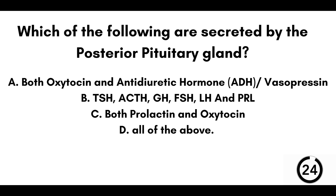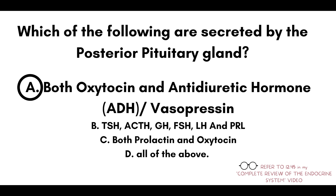Question number ten: which of the following are secreted by the posterior pituitary gland? A) Both oxytocin and antidiuretic hormone (ADH), also known as vasopressin. B) TSH, ACTH, GH, FSH, LH, and PRL. C) Both prolactin and oxytocin. Or D) All of the above. Our answer here is A, both oxytocin and ADH, also known as vasopressin.